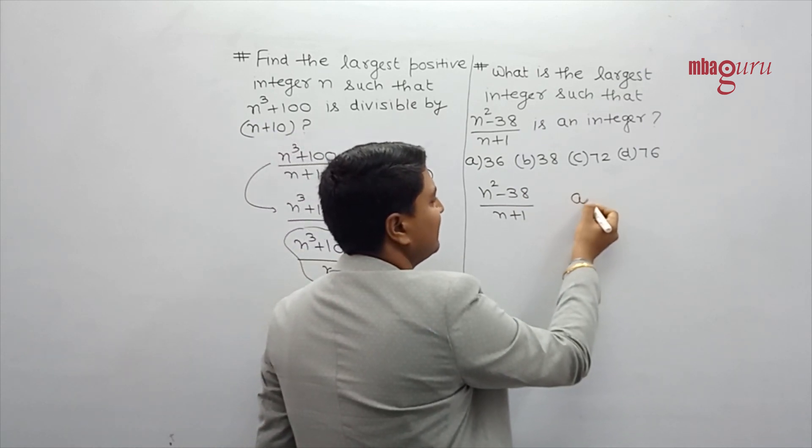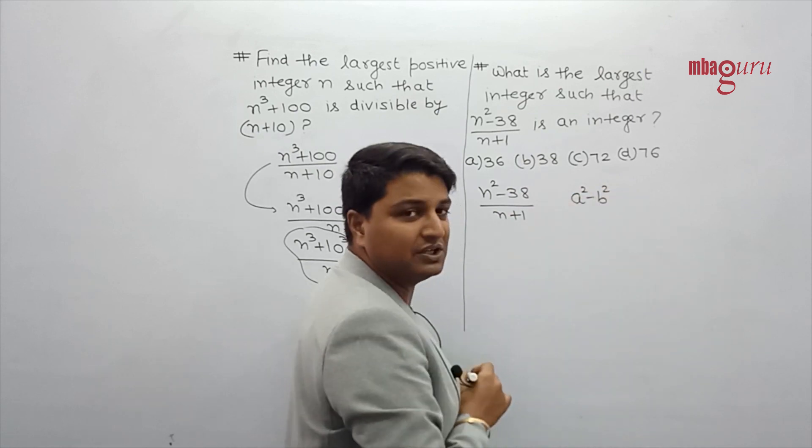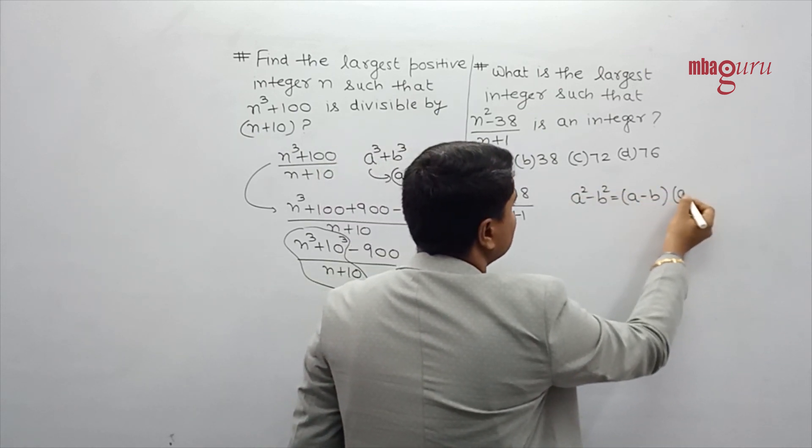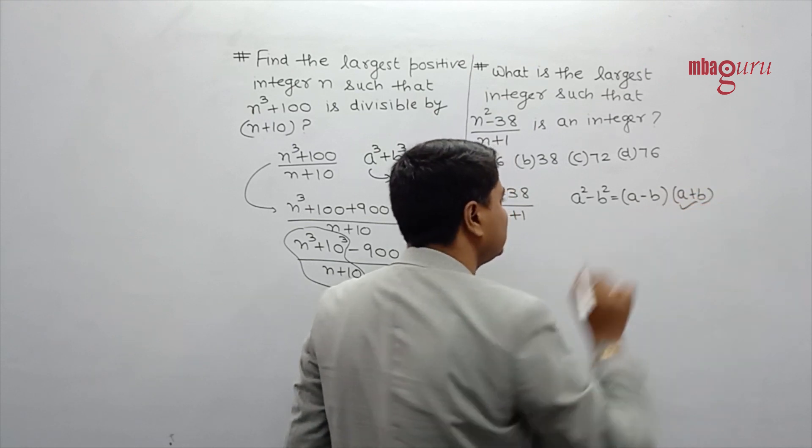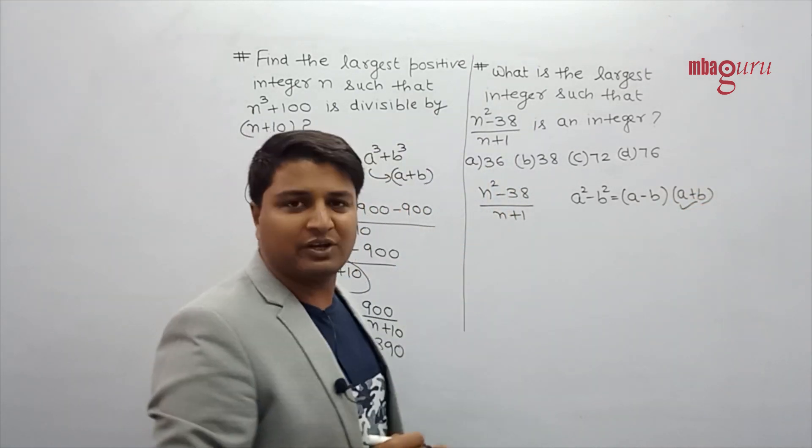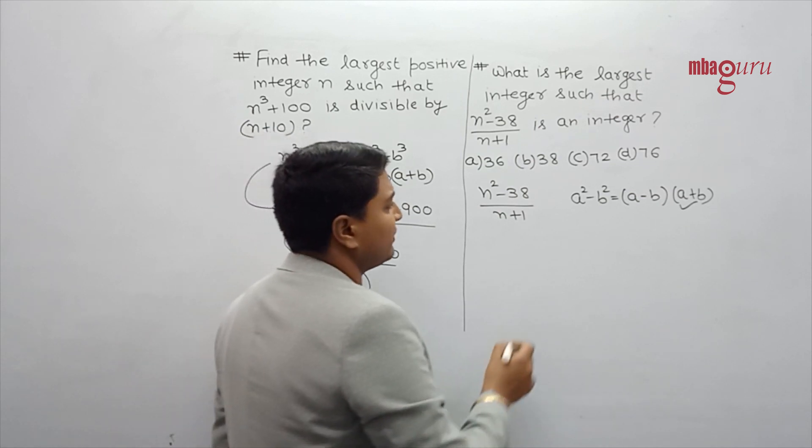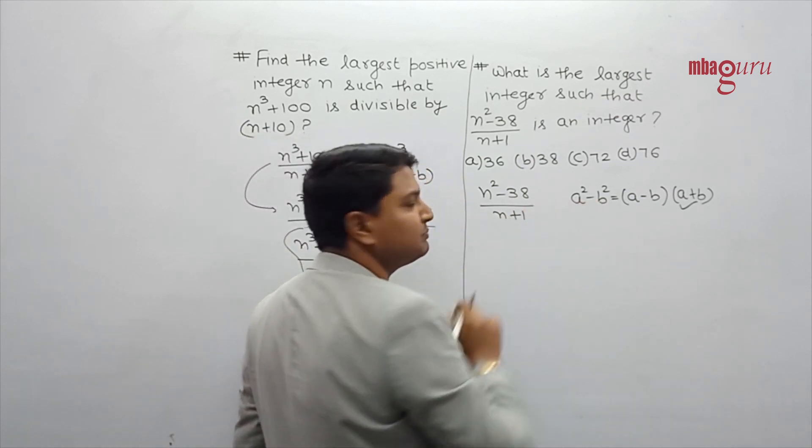So n square uses an identity that we have a square minus b square. Can we say a square minus b square is a minus b into a plus b. So this is a plus b. So we also make a form of a square minus b square.